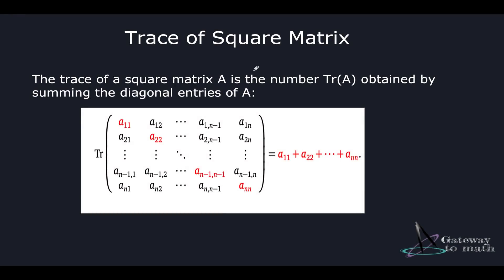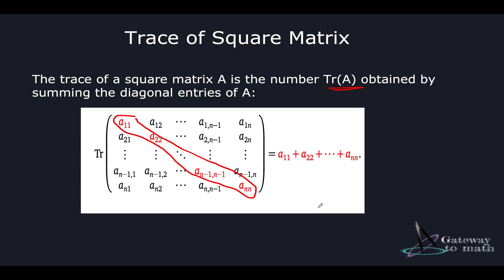Now, the trace of a square matrix — this is another important term to keep in mind. The trace of a square matrix A, represented as tr(A), is obtained by summing the diagonal entries of A, so it becomes a₁₁ + a₂₂ and so on, adding all diagonal entries together.